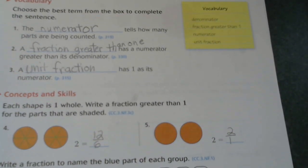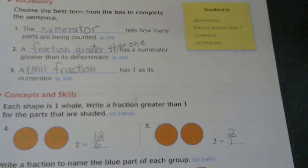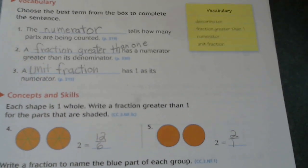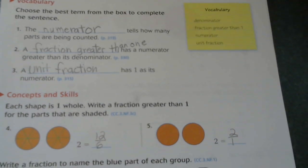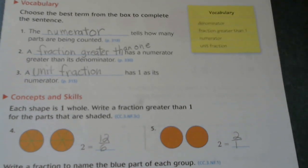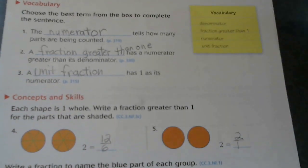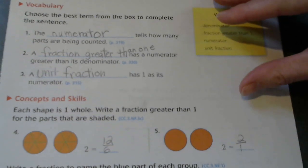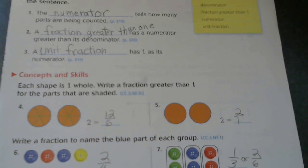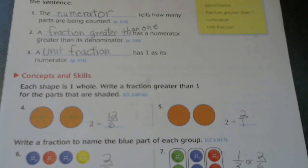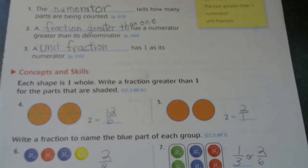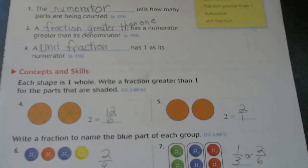Number two says a fraction greater than one has a numerator greater than the denominator. That means a fraction greater than one has the top number, which is the numerator, greater than the bottom number, which is the denominator. Number three, a blank has one as its numerator and that's a unit fraction. So for instance, if I had the fraction three fifths, my unit fraction would be one fifth.